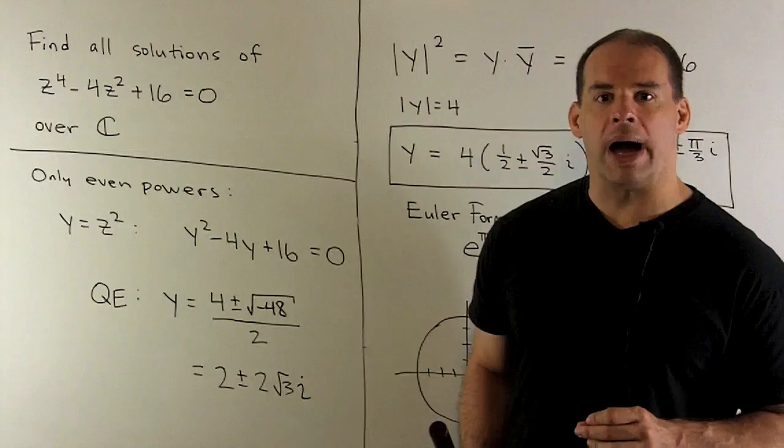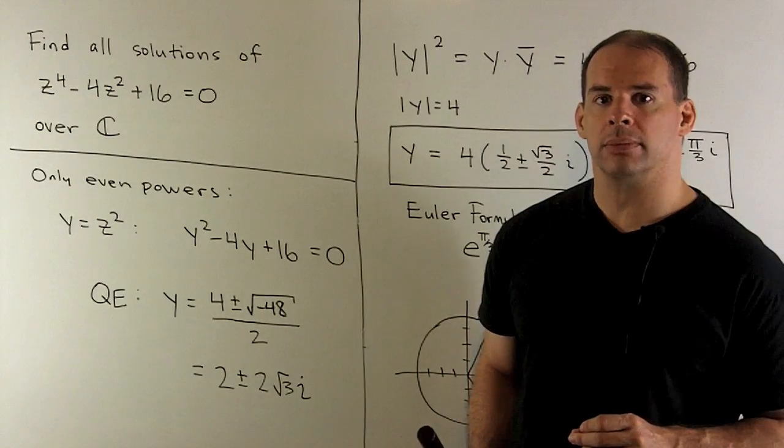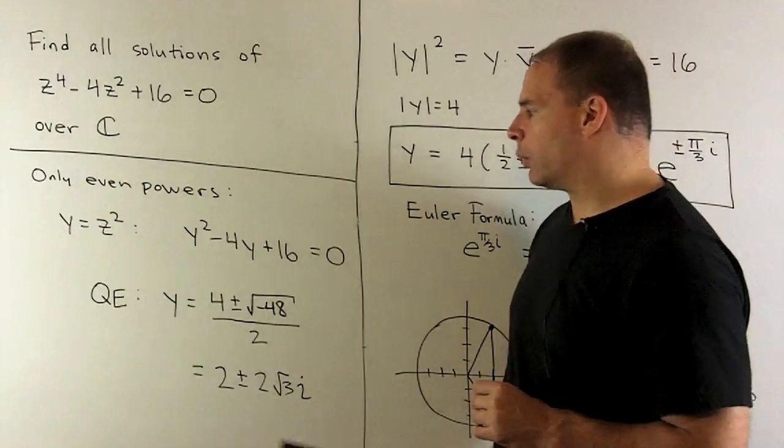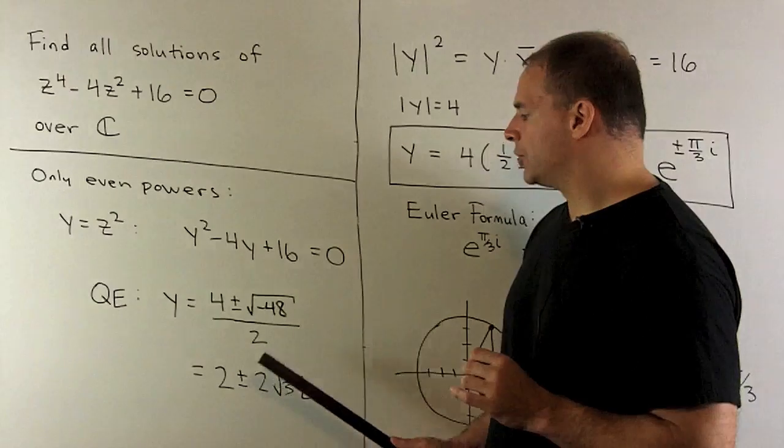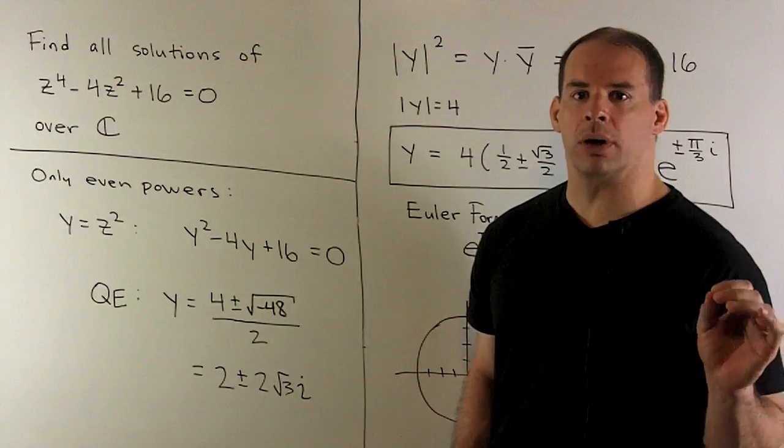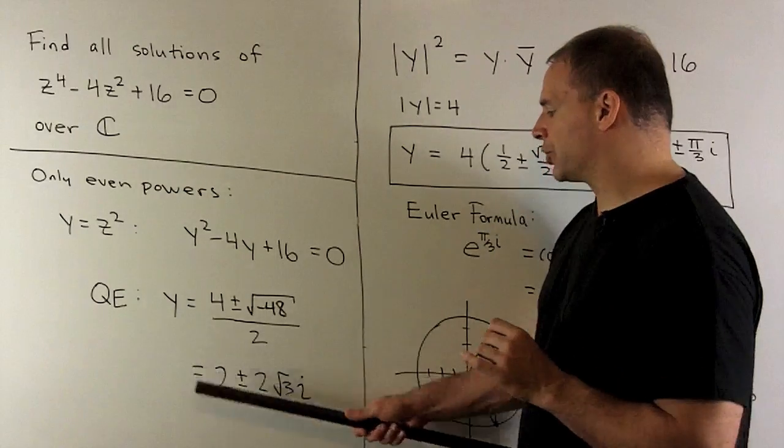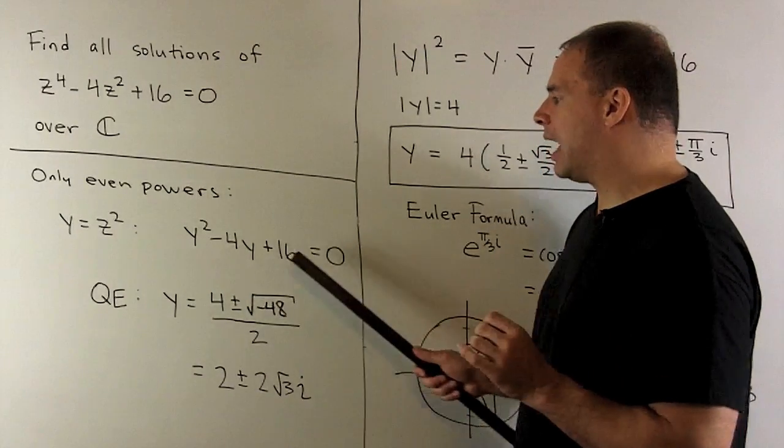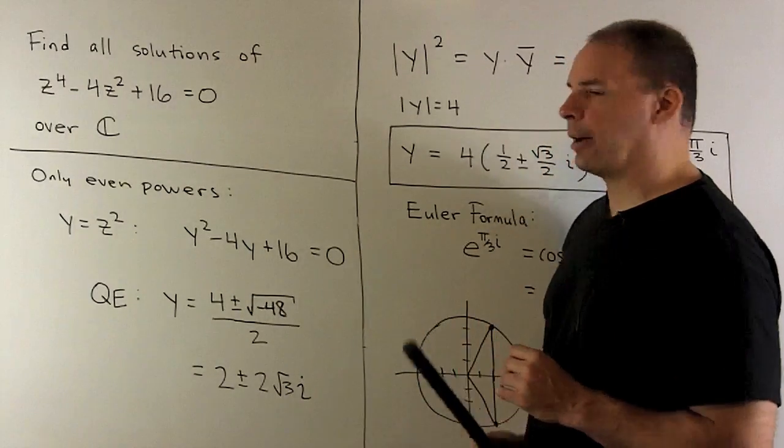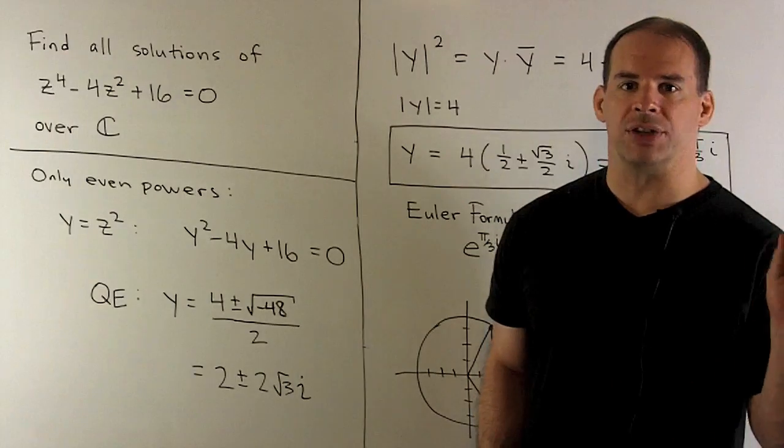Then we can solve for y using the quadratic equation. So we'll have that y is equal to 2 plus or minus 2 times square root of 3 times i. Of course, we check our work, so we'll take each solution, put it into our polynomial, and make sure we get zero to come out. I'll leave that to you.